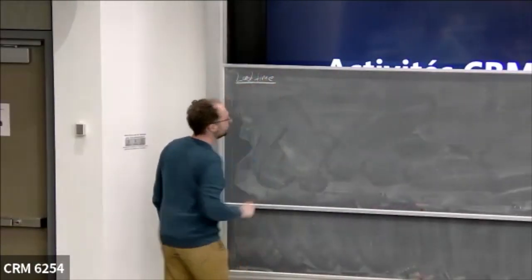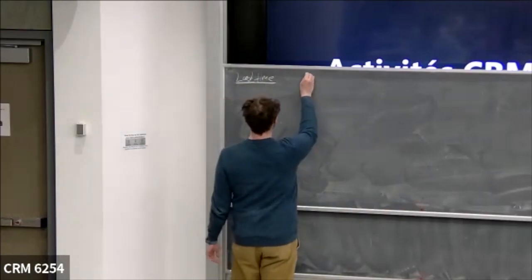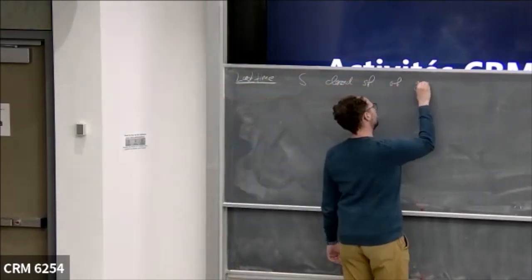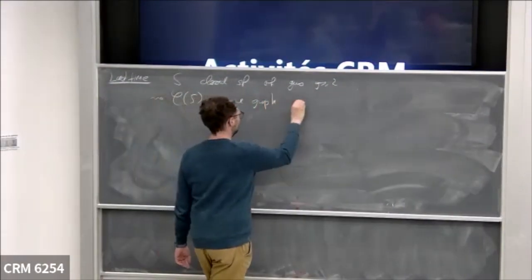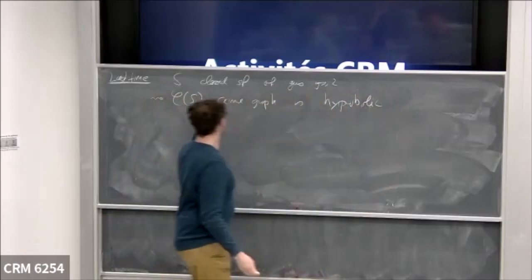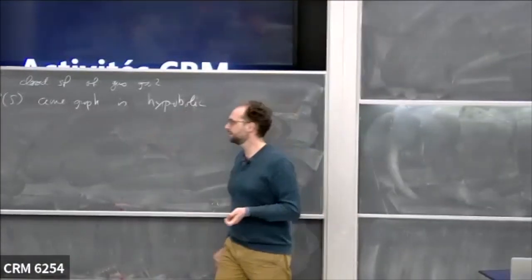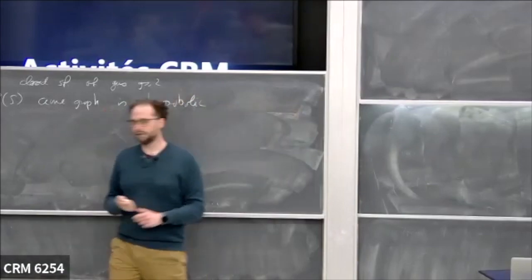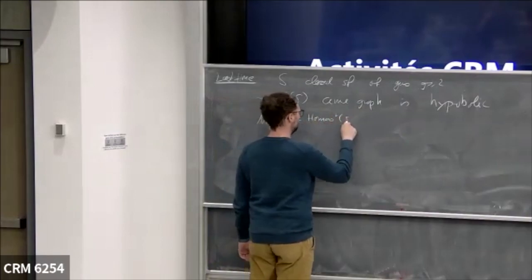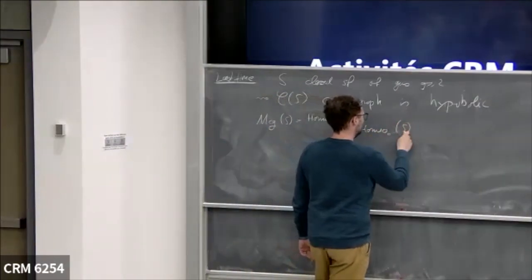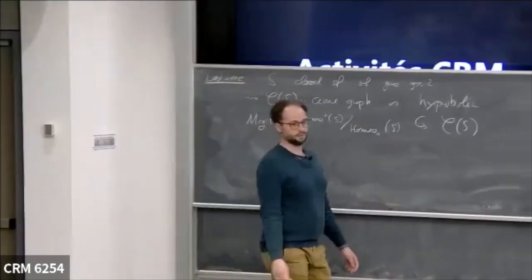We pivoted away completely from homeomorphism groups last time and started talking about the curve graph. We're still in the setting where S is a closed surface of genus g ≥ 2. We built this curve graph and showed it is hyperbolic — the gadget where I take an isotopy class for every curve, connect them by an edge if they are disjoint, and use bicorn surgery paths to show it's a Gromov hyperbolic space. I care because the mapping class group — all orientation-preserving homeomorphisms up to isotopy — acts on this as simplicial automorphisms.